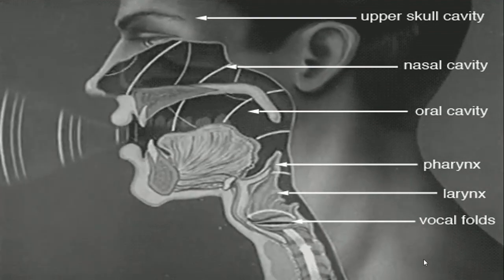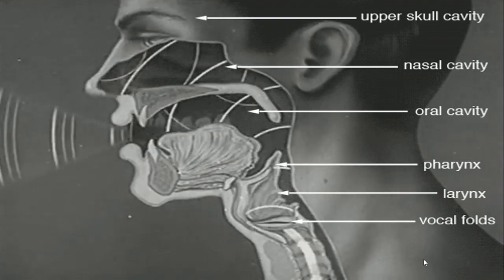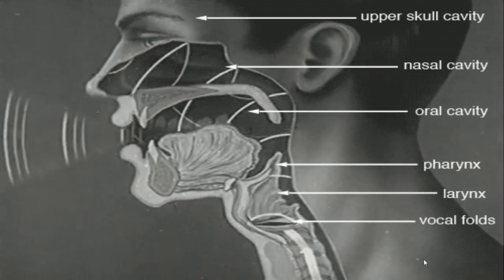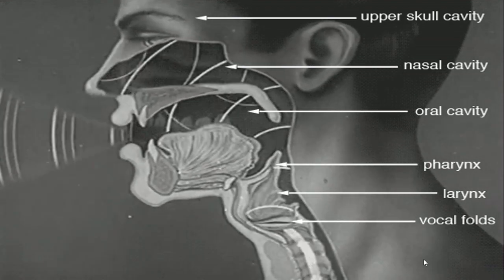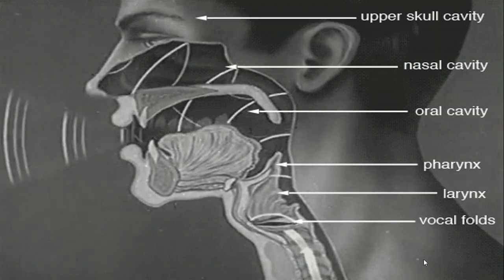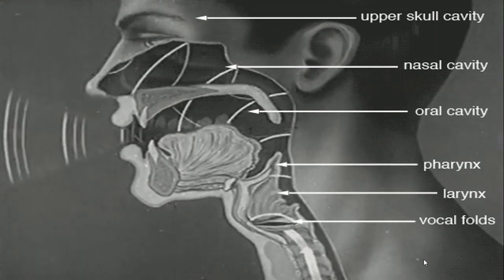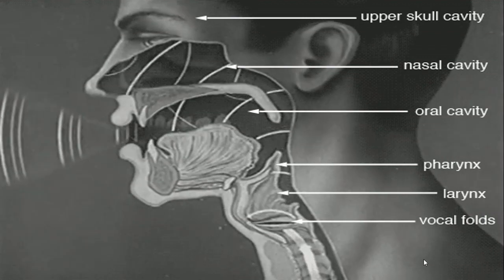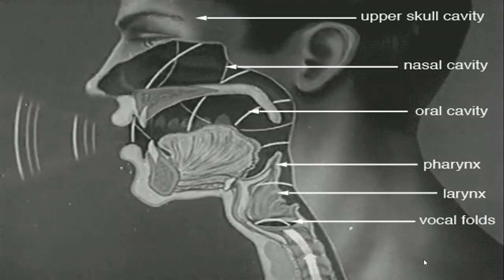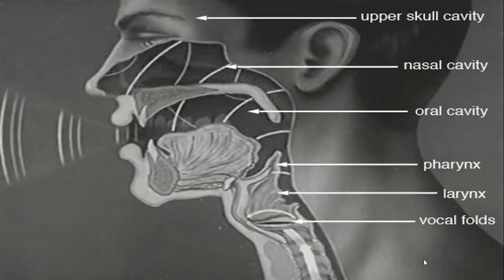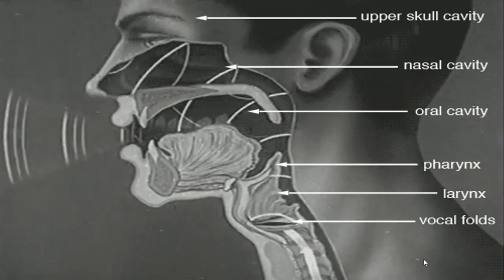This vibration determines the pitch of the voice. When the vibration is low — that is, when the vocal cords vibrate slowly — the pitch is low. When they vibrate fast, the pitch is high. When we speak normally we constantly change the pitch of our voice, and the way in which we change our pitch determines the intonation of a language.